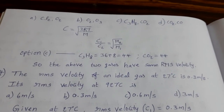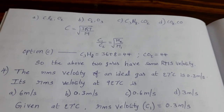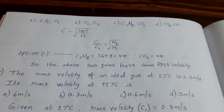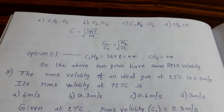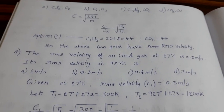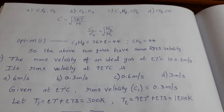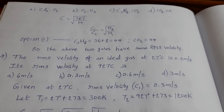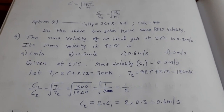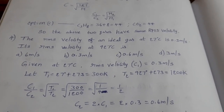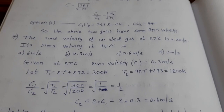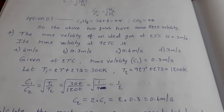The RMS velocity of an ideal gas at 27°C is 0.3 m/s. Its RMS velocity at 927°C is required. Converting: T₁ = 27 + 273 = 300 K, T₂ = 927 + 273 = 1200 K. Using C₁/C₂ = √(T₁/T₂), only temperature varies. Substituting: 0.3/C₂ = √(300/1200), giving C₂ = 0.6 m/s. Option C is the answer.